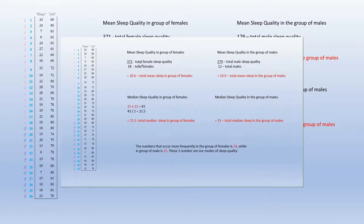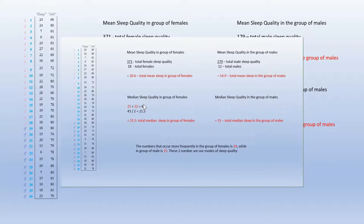We have 371 total female sleep quality divided by the total number of females, which is 18, and we got 20.6 as the mean sleep in the group of females. For the median sleep quality in the group of females, if we sort the numbers, we have 21 and 22 in the middle. Adding these two and dividing by two, we get a median of 21.5.